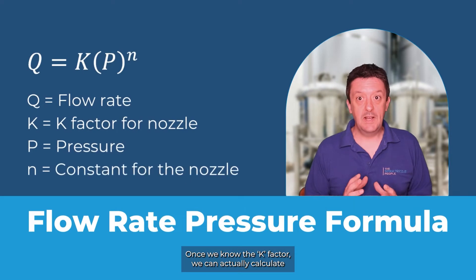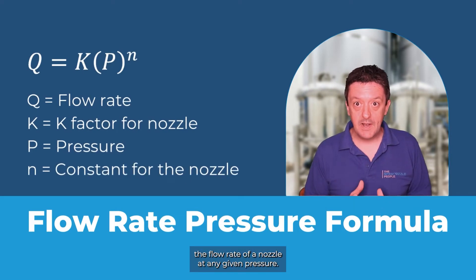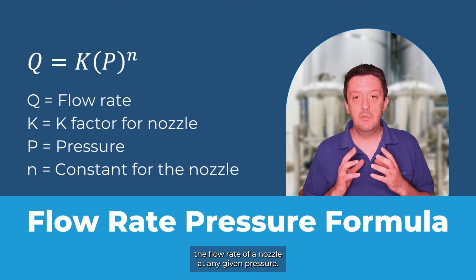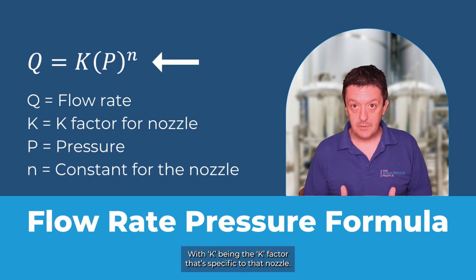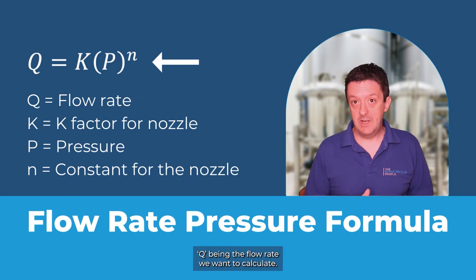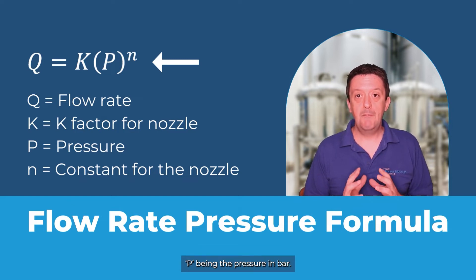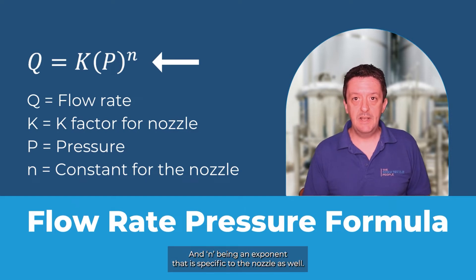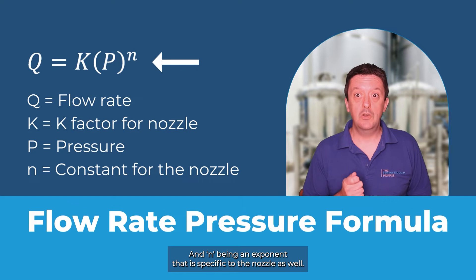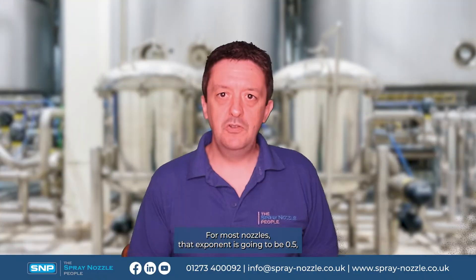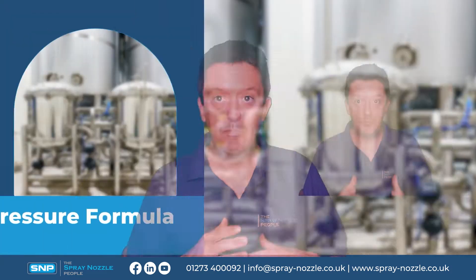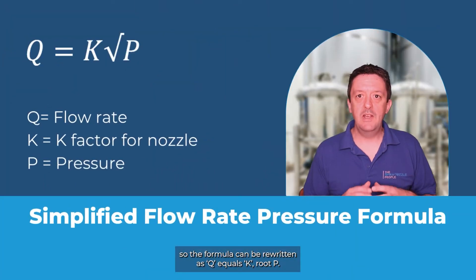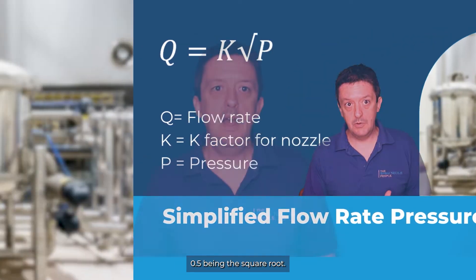Once we know the K factor, we can actually calculate the flow rate of the nozzle at any given pressure. We can use this formula here, with K being the K factor specific to that nozzle, Q being the flow rate we want to calculate, P being the pressure in bar, and N being an exponent that is also specific to the nozzle. For most nozzles, that exponent is going to be 0.5, so the formula can be rewritten as Q equals K times the square root of P.